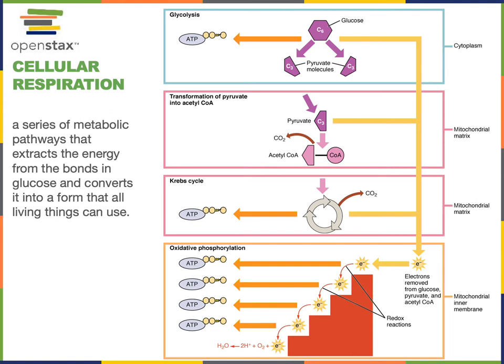Following the Krebs cycle, oxidative phosphorylation is a metabolic pathway that will accept high energy electrons coming from glycolysis, the pyruvate dehydrogenase complex, and the Krebs cycle. As these high energy electrons move through oxidative phosphorylation, they move down what's known as the electron transport chain — a series of enzymes that carry out reduction oxidation reactions.